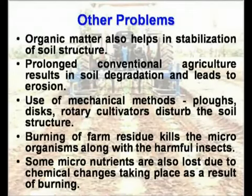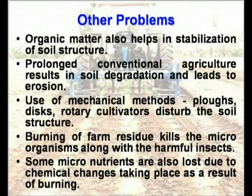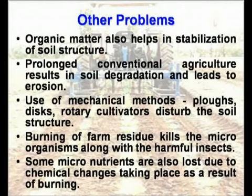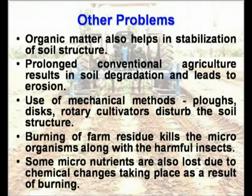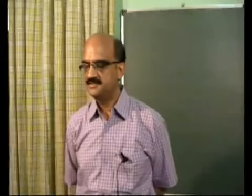Various methods are used to till the soil — plows, disc cultivators, rotary cultivators — all of which disturb the natural structure of the soil. Another problem is burning of farm residue. After harvesting, farmers burn residue thinking it will kill harmful bacteria and insects and restore soil fertility. But in turn, it kills useful microorganisms that provide fertility, and some nutrients are also oxidized in the process, resulting in loss of soil fertility after burning.